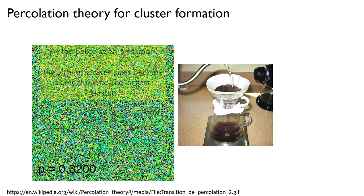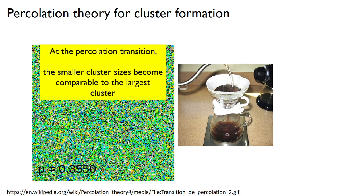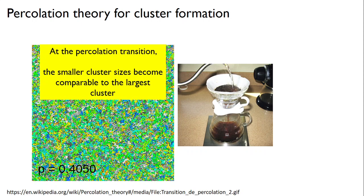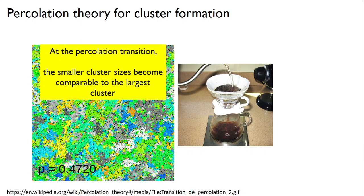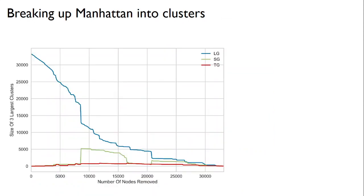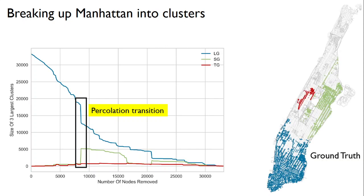At the percolation point, which is p equals 0.5, the smaller cluster sizes become comparable to the largest cluster. I use the same idea on the street network of Manhattan, where edges are removed until the percolation point is reached, where we find three large clusters. You can see the three large components corresponding to the street network of Manhattan — at the percolation point, there is a sudden drop in size of the largest cluster, and the second and third largest clusters have a corresponding peak. From this, we obtain three clusters as the ground truth and remove the rest of the network to test our three clustering algorithms.